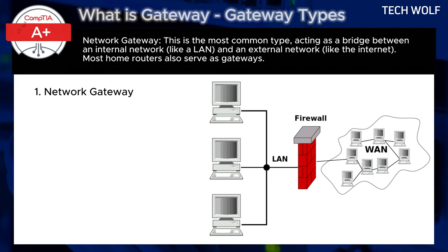The first type is the network gateway. This is the most common type, acting as a bridge between an internal network like a local area network and an external network like the internet. Most home routers also serve as gateways.